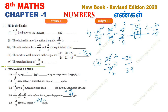Let us review the answers once more. First answer: minus 4 and minus 3. Second answer: minus 3.75. Third answer: equidistant value zero. Fourth answer: minus 30 by 48. Fifth answer: minus 29 by 39.